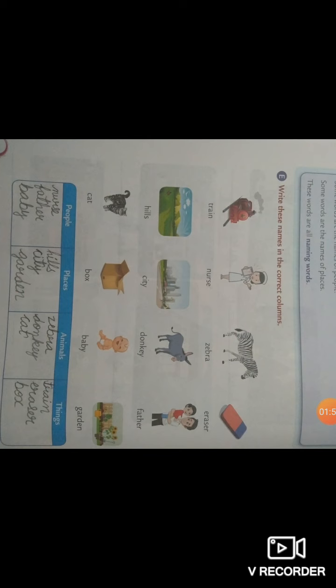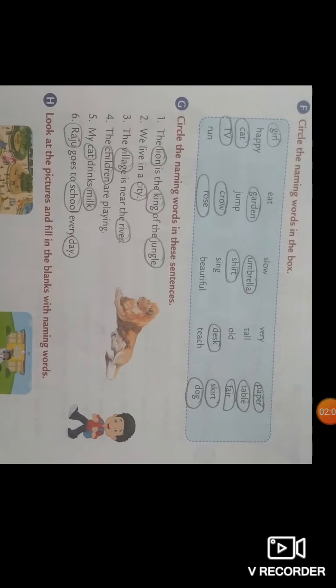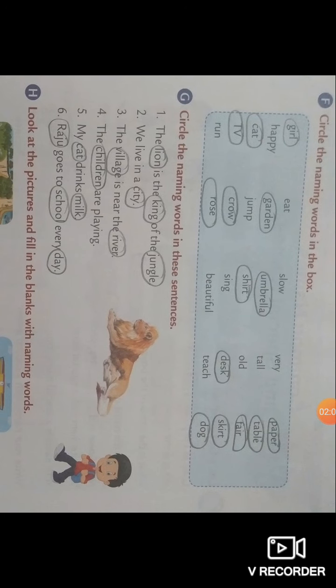Next we have hills. This is the name of a place, so you will write down hills in the column of places. Same way you have to do others also. Then we have page 19. Here what you have to do: circle the naming words in the box.